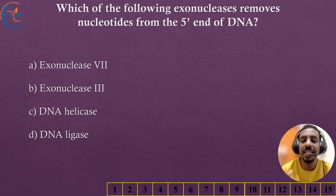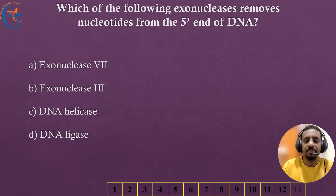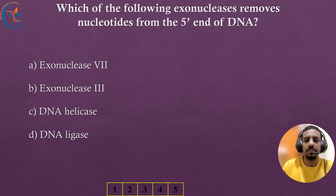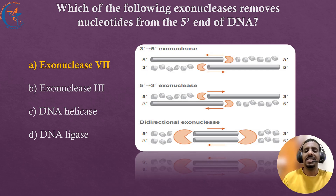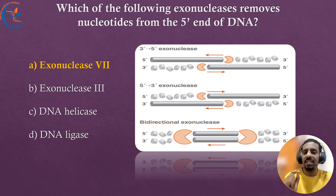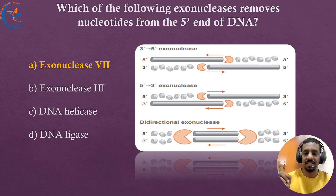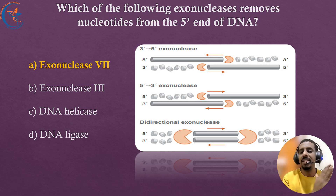Which of the following nucleases removes nucleotides from the 5' end of DNA? The correct answer is Exonuclease VII. Exonuclease VII selectively degrades DNA from the 5' end. In contrast, Exonuclease III degrades from the 3' end.